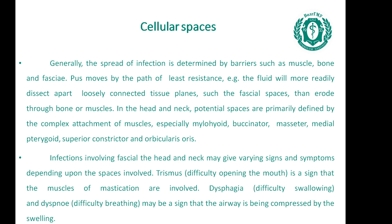Generally, the spread of infection is determined by barriers such as muscle, bone and fascia. Pus moves by the path of least resistance. The fluid will more readily dissect apart loosely connected tissue planes, such as facial spaces, than erode through bone or muscles. In the head and neck, potential spaces are primarily defined by the complex attachment of muscles, especially mylohyoid, buccinator, masseter, medial pterygoid, superior constrictor and orbicularis oris.